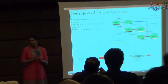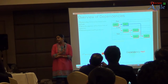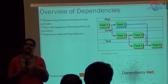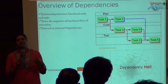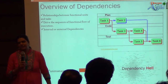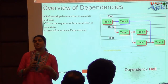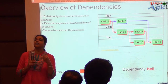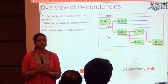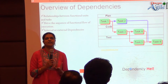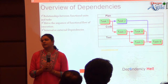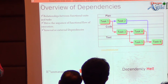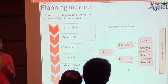We all know what dependencies are — they are basically relationships between functional units. In regular project management we might have seen start-to-start, start-to-end, and so on. Especially in Agile, if you don't handle them, you will ultimately end up making it a Scrum-fall or a waterfall. If you don't handle dependencies, it becomes a dependency hell.